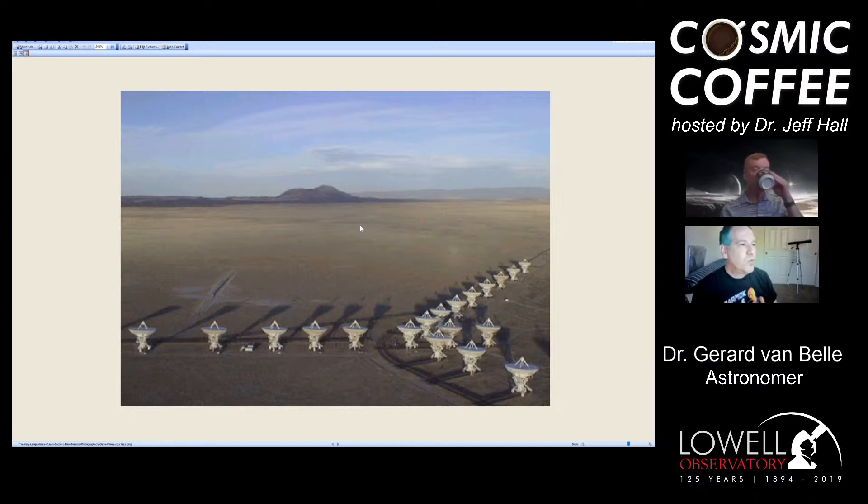So interferometry is basically if you want to build a really big telescope, like really big, but you have a limitation called a budget. Sometimes you can actually get around your budget limitations by building your big telescope out of small telescopes. And this approach has been done actually for quite a while in astronomy at certain wavelengths, certain colors of light.